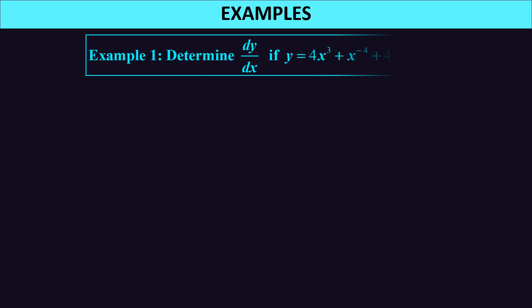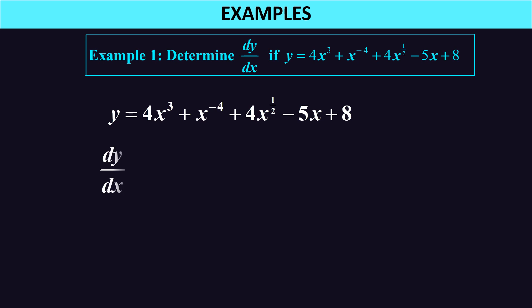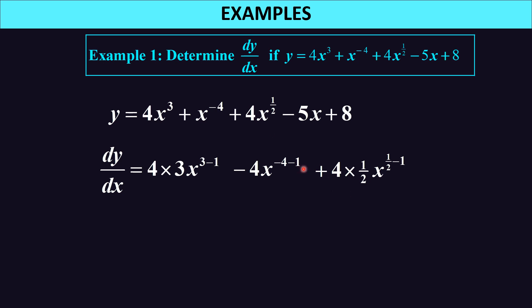Let us look at this first example: determine dy/dx if y equals 4x³ plus x to the negative 4 plus 4x to the half minus 5x plus 8. Differentiating each term: 4x³ gives 4 times 3 times x to the 2; x to the negative 4 gives negative 4 times x to the negative 5; 4x to the half gives 4 times a half times x to the negative half; negative 5x gives negative 5; and the constant 8 gives 0.